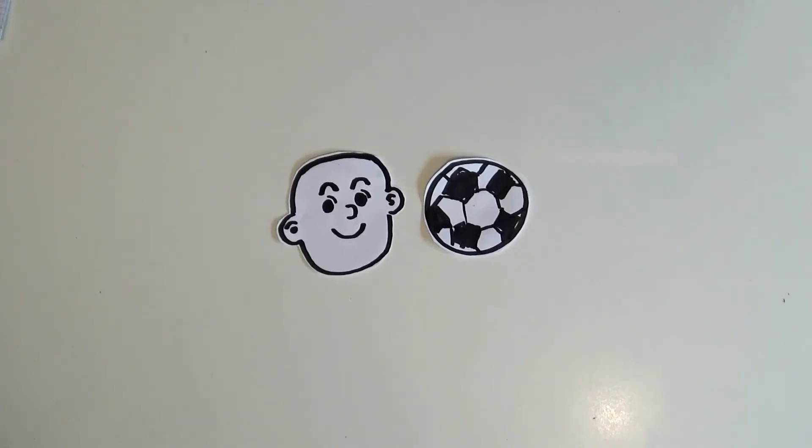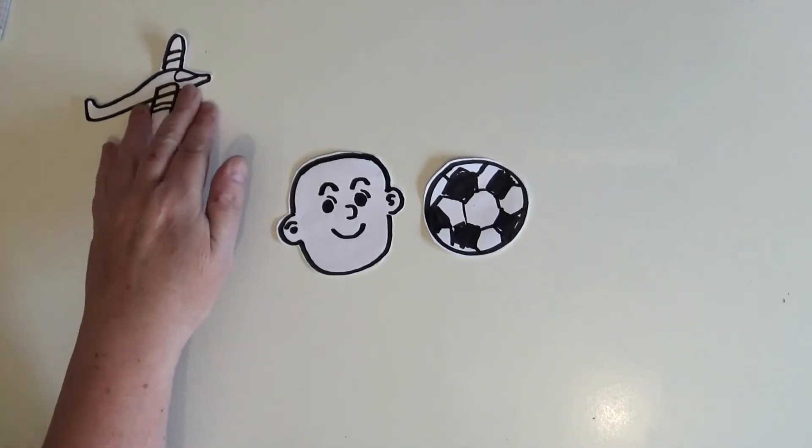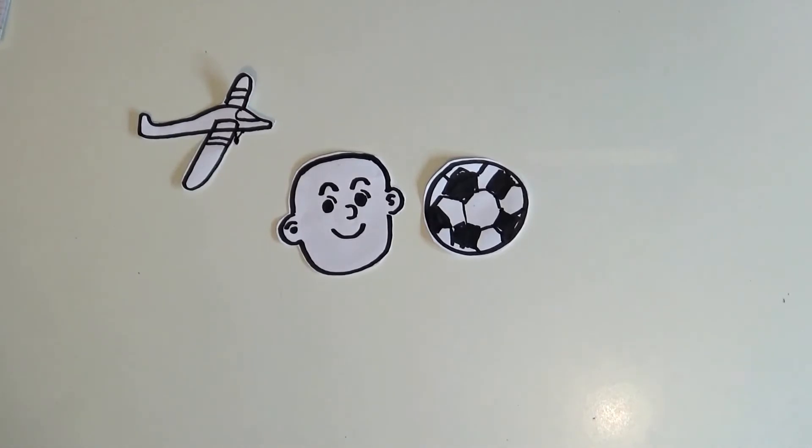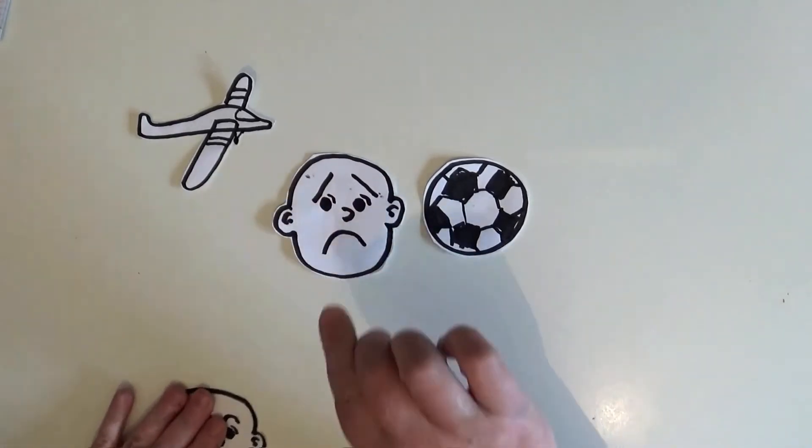Well now we started to think about what things Seamus doesn't like and we know that he is scared of flying. So we drew a plane and we thought about how Seamus would feel if he was getting on a plane and we decided he would feel scared. So we looked back at our sketchbooks and we found a scared face and we copied that out and cut it out.